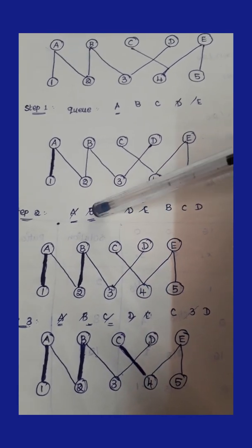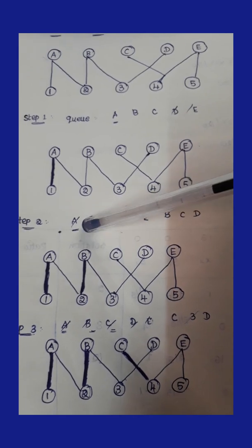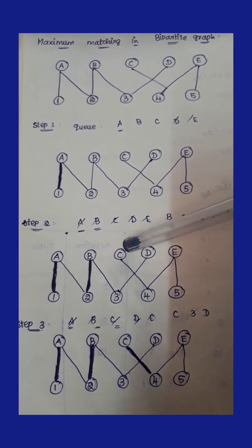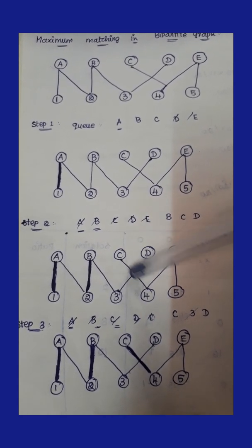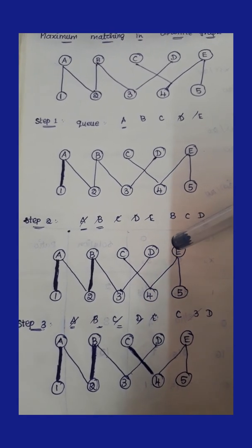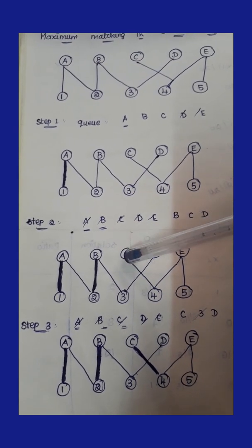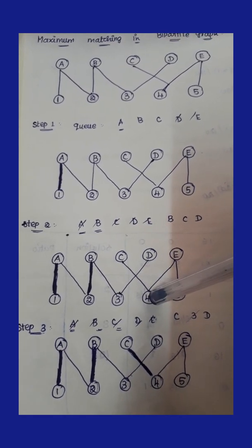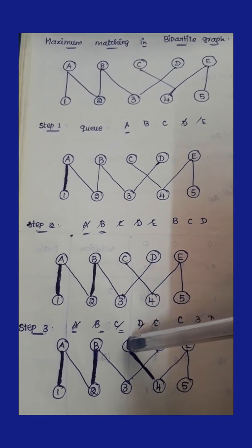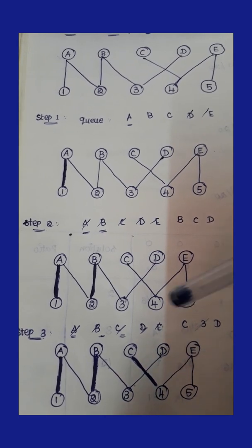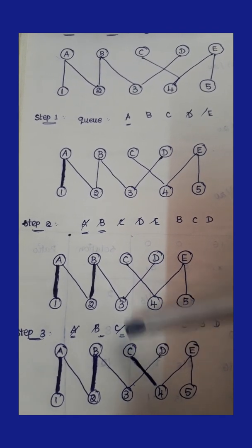B is now visited in the queue, so we strike it out. Next we move to vertex C. C is only connected with 4, and 4 is connected with E. Since C has no other connectivity other than 4, C is perfectly matched with 4 alone. We put the shaded line over C and 4, confirming C is a perfect match for 4. C is then struck out from the queue.